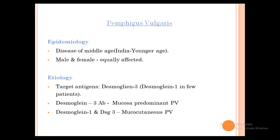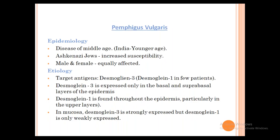Pemphigus Vulgaris is a disease of middle age, though in India younger people are more commonly affected. Males and females are equally affected. The target antigen is mainly Desmoglein 3, and Desmoglein 1 in a few patients. Desmoglein 3 is found in the mucosa (oral cavity), while Desmoglein 1 is found throughout the epidermis, but is weakly expressed in mucosa. Very common in Ashkenazi Jews.